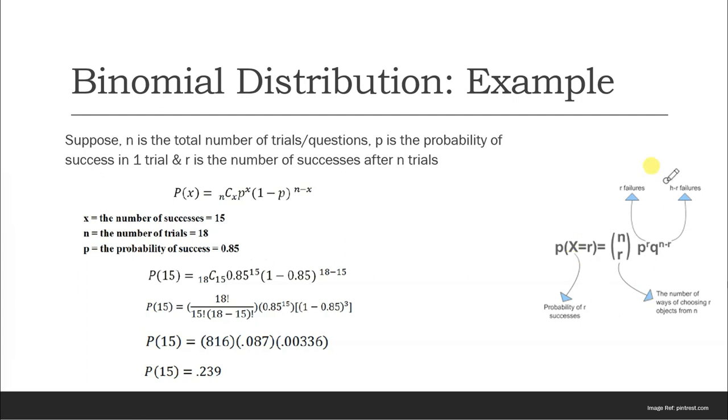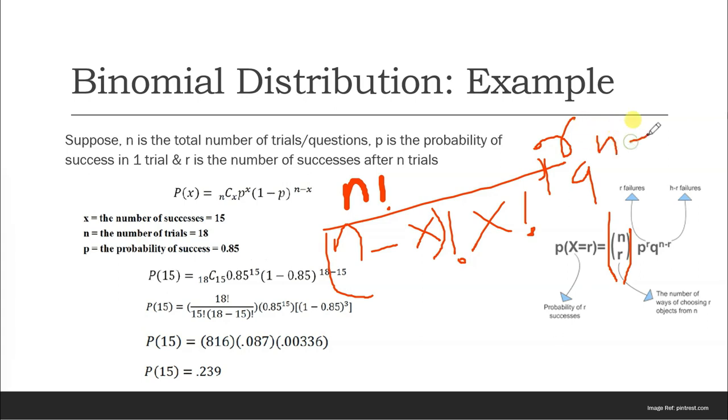Let me show you how to break this formula. The n by r part can be represented by n factorial, so it will be replaced like this: n factorial divided by n minus x factorial times x factorial. Then we have p to the power r.